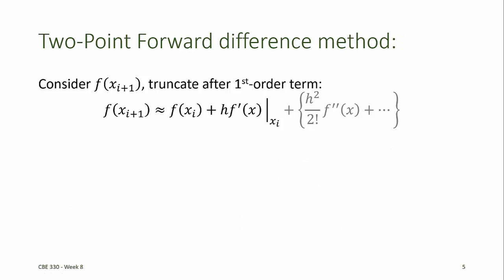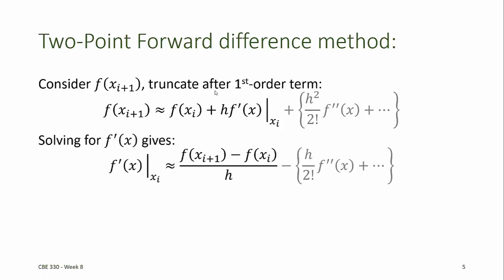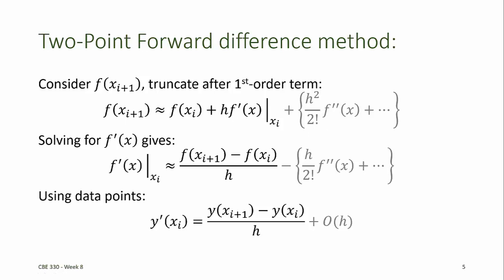Similarly, we can derive a two-point forward difference method for the first derivative. Again, writing the Taylor series expansion around the point xi, we now predict the point at xi plus 1 instead of the point at xi minus 1. We truncate the higher-order terms and solve for the derivative f prime, then substitute the y values in for the function. Now we are approximating the derivative of the y data at xi using the point at xi and the point at xi plus 1. This is called the two-point forward difference formula.